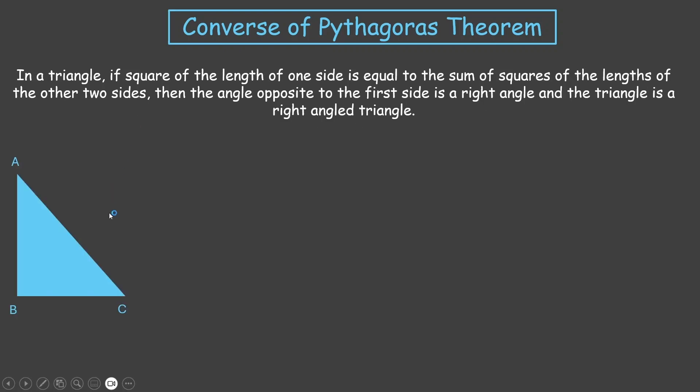that is, if we have a triangle such that AC² equals AB² plus BC², then the angle opposite to the first side—that is, angle B—is a right angle and the triangle is a right-angled triangle.